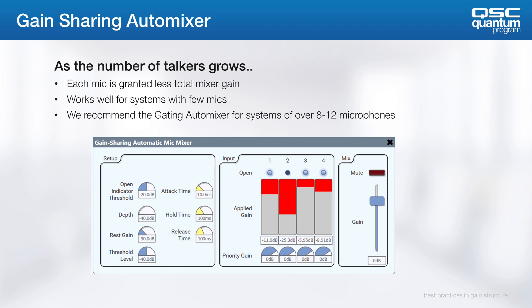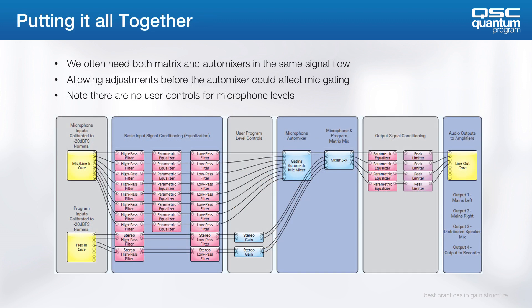Putting those things into an overall signal flow from left to right, you have inputs calibrated to negative 20 dB FS nominal with some standard EQ, your choice of automixer, and output signal conditioning to tune the room, and then the output blocks. One thing to note is that there are no user-level controls for microphones ahead of the automixer. The automixers take the noise level in the room and the level at each mic into account when deciding who gates, so allowing user-level control could be a problem here.